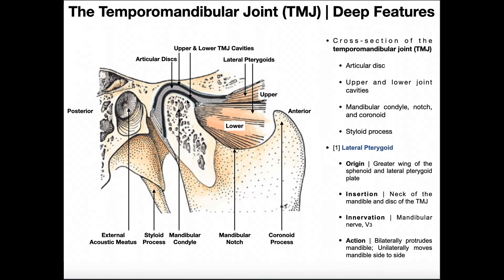The mandibular condyle is fibrocartilage because if you think about it, we're chewing many times a day — chewing is a repetitive movement. Considering you do it every day, multiple times over the course of your entire life, you'd want a lot of protection there. So the lining of the mandibular condyle is fibrocartilage rather than hyaline. There are also a couple of muscle heads attaching or inserting directly on both the joint capsule of the TMJ and the articular disc — this is the lateral pterygoid.